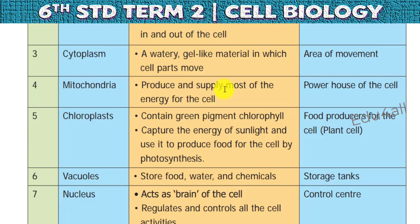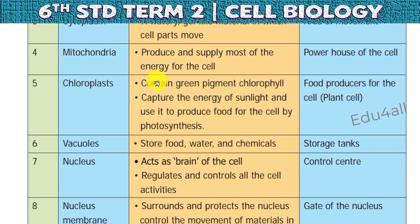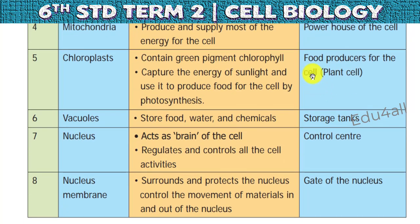Mitochondria supplies energy to the cell — it is the powerhouse of the cell. Chloroplast is a green color pigment that produces energy with the help of sunlight, so it is a food producer, present only in plant cells. Vacuole stores food, water, and chemicals — it is a storage tank. It is bigger in plant cells and smaller in animal cells.